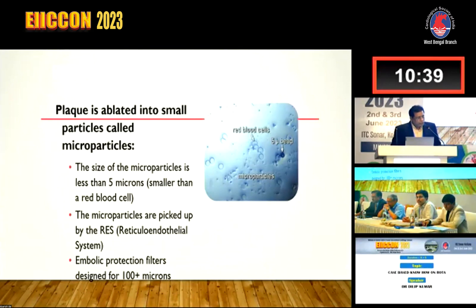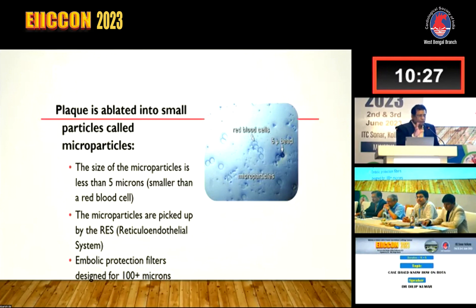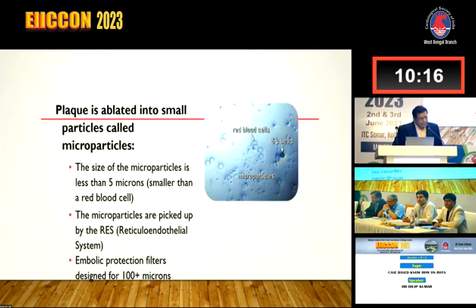The particles you get after rota runs are about less than five microns, so they don't usually clog the vessel. You don't typically get a no-flow situation - you can get a slow flow situation, very rarely no flow. All these particles pass through the capillaries and are taken care of by the reticuloendothelial system afterwards. Nothing is retained in the microcirculation after some time.